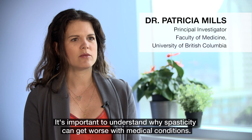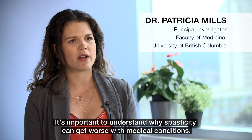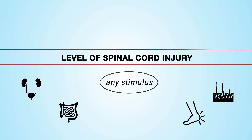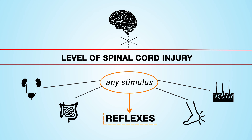It's important to understand why spasticity can get worse with medical conditions. Any stimulus below the level of a spinal cord injury can trigger the reflexes underneath that level of injury. Because the brain can no longer send a message down through the spinal cord to calm the reflex down, that reflex can be activated and it tends to persist.